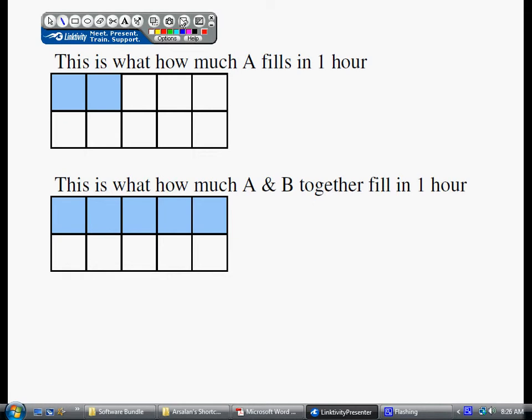From our basic understanding of how things work in nature, if it takes machine A to finish the whole thing in five hours, in one hour machine A must be doing this much. And when the two are working together, it takes about two hours to do the job. So when they're working together, it'll take them one hour to do this much.